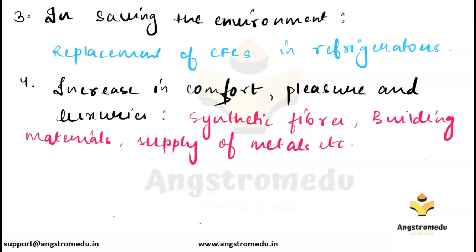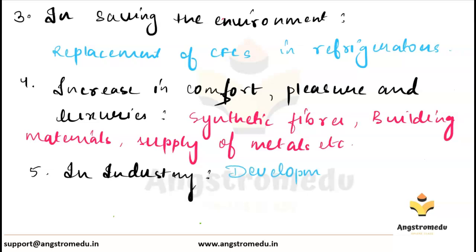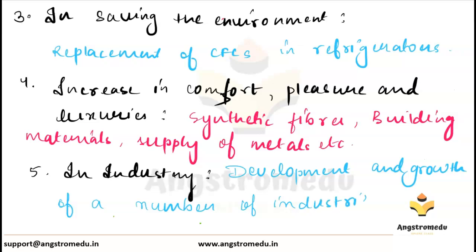The next scope and importance of chemistry is its role in industry. Chemistry plays a very important and useful role in the development and growth of a number of industries. These industries include glass, cement, paper, and textile, all of which operate on the principles of chemistry.